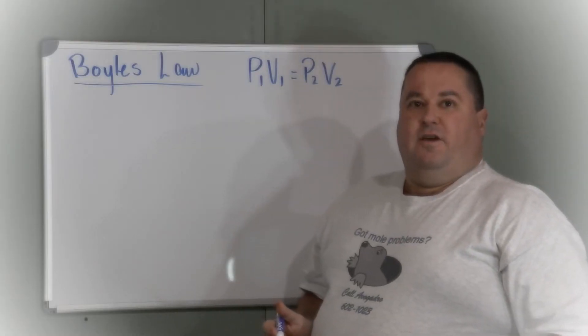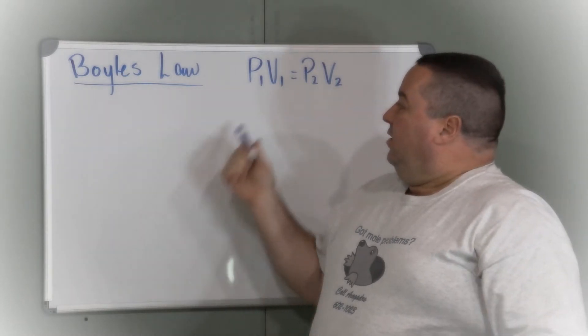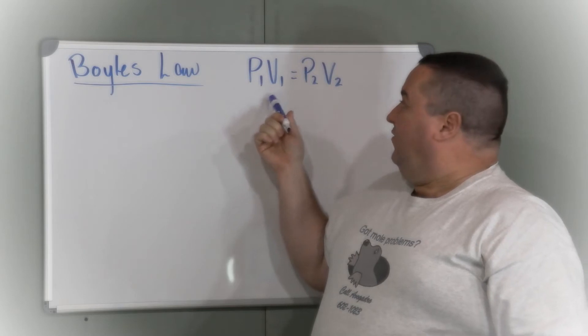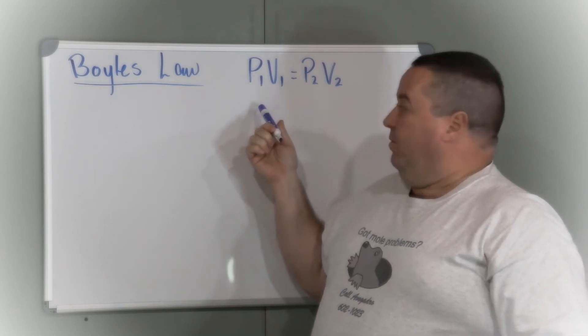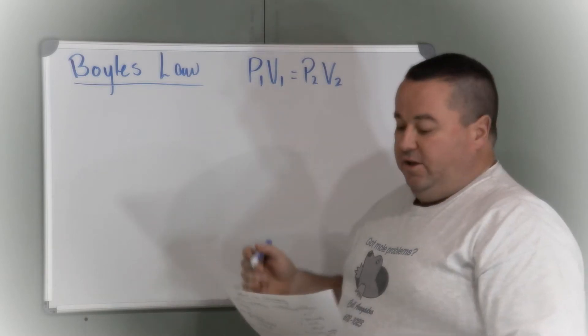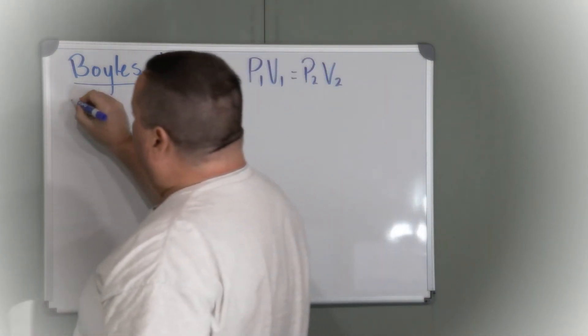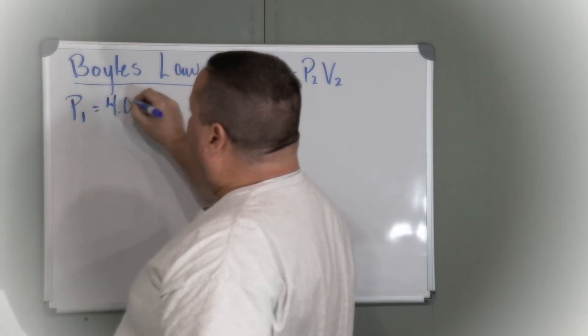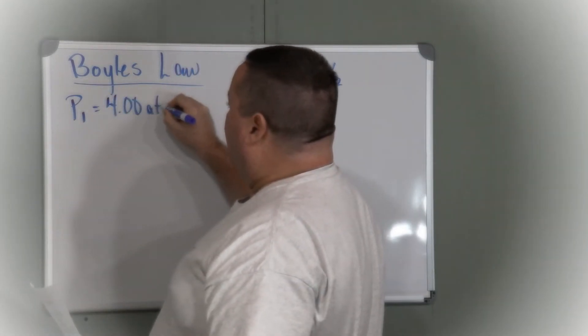If we look at the information given in this problem and look at our formula page, we can decide that this is a Boyle's Law problem. We're given information about pressure and volume. The original pressure, P1, is 4.00 atmospheres.